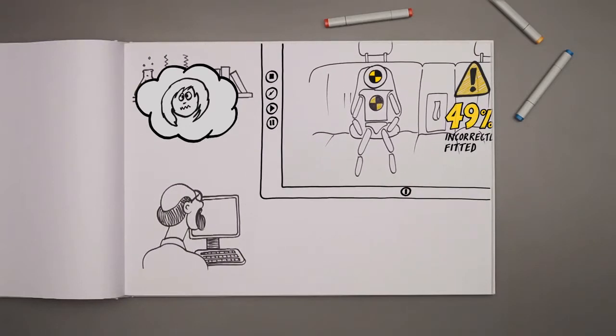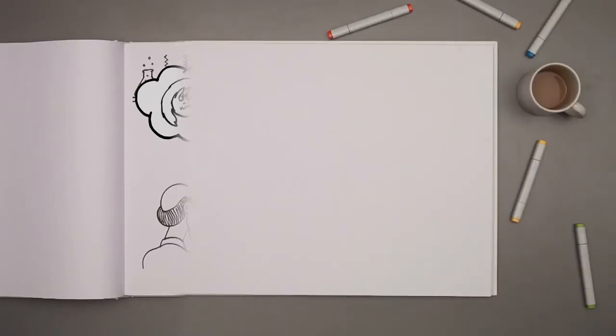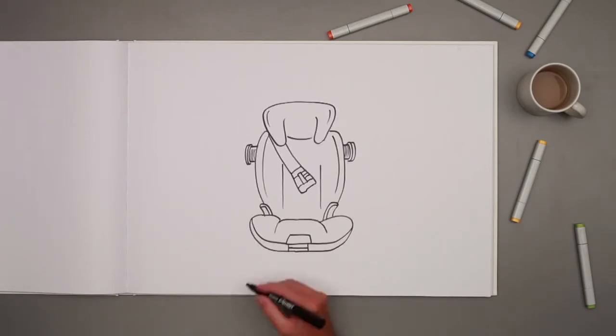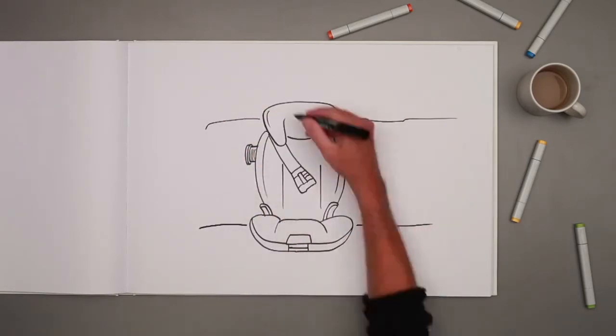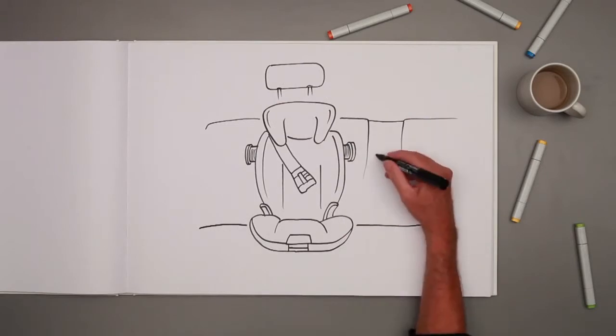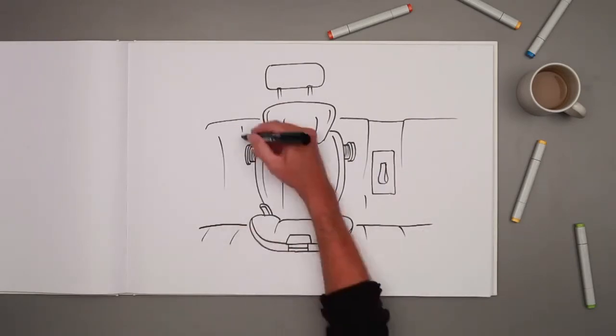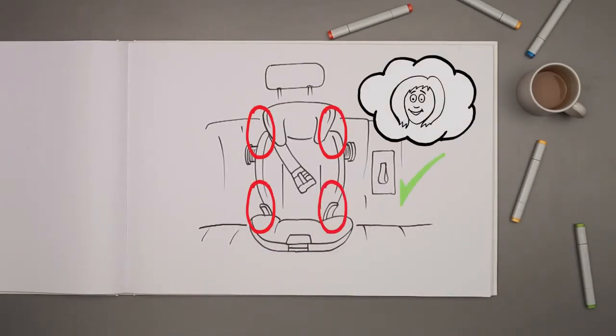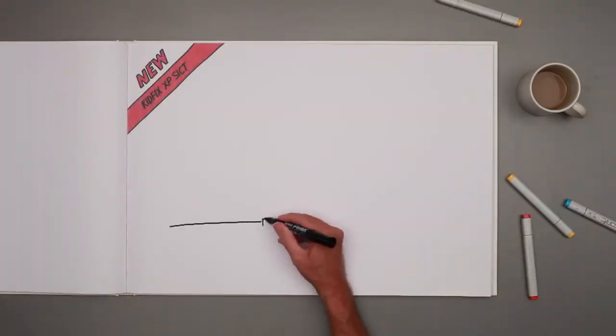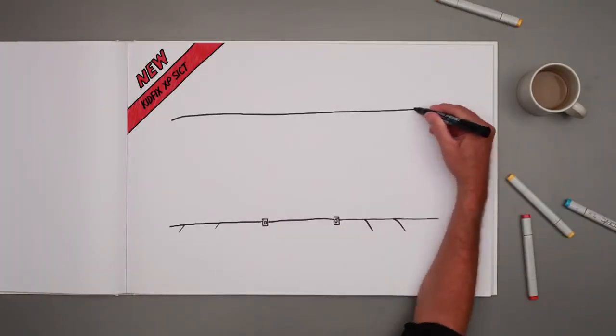Using our knowledge and experience, our experts developed an ideal solution to address some of these issues. We gave the KidFix XP-6 belt guides that make fitting easy, even when you're in a hurry. Route the seatbelt through the red belt guides to show that it's fitted correctly, and that your child is safe.